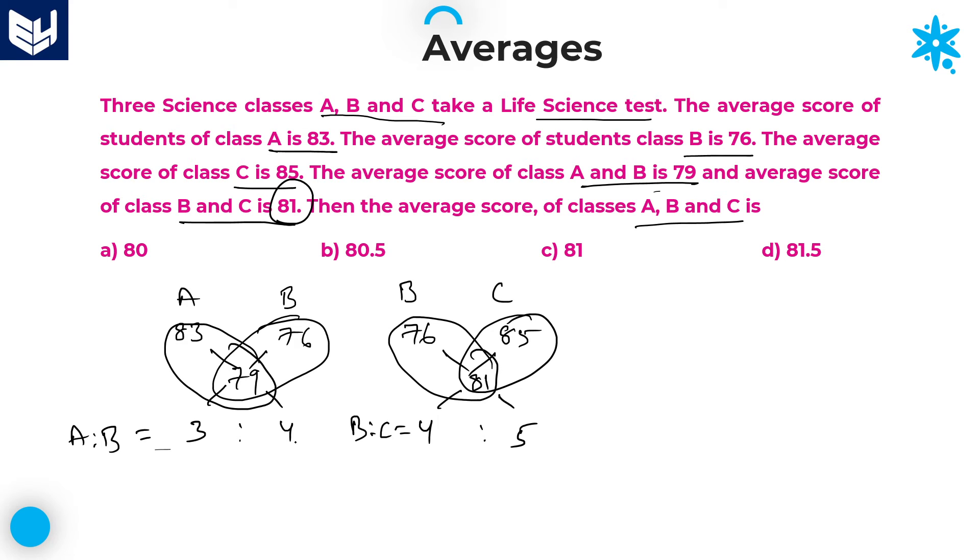A is to B is equal to 3 is to 4 and B is to C is equal to 4 is to 5. That is why, if you observe carefully, the value of B is common in both the ratios. Therefore, A is to B is to C, which is equal to 3 is to 4 is to 5. That is ABC strength ratio. Now the question is, what is the average score of all the three classes together?